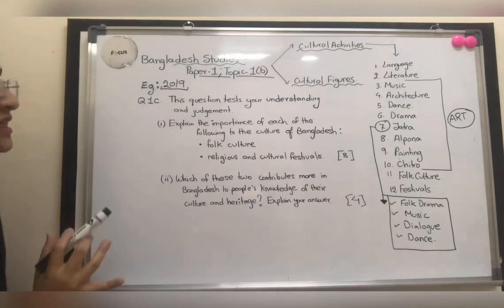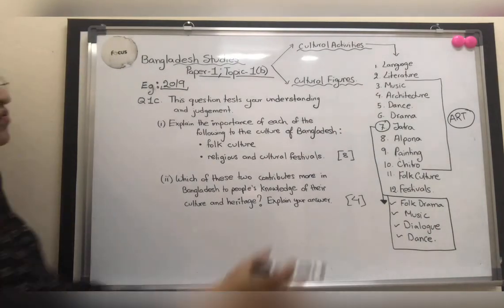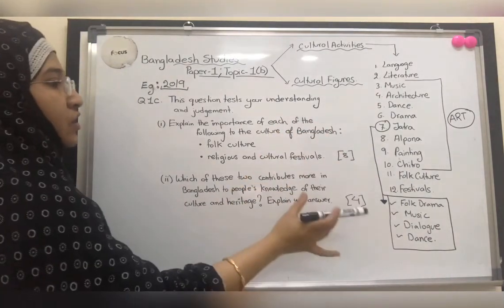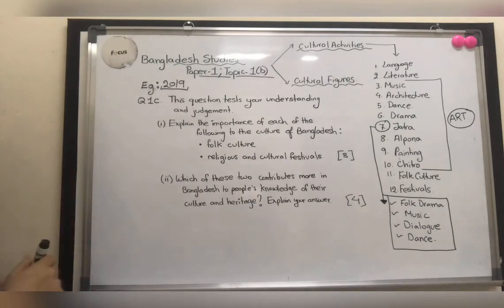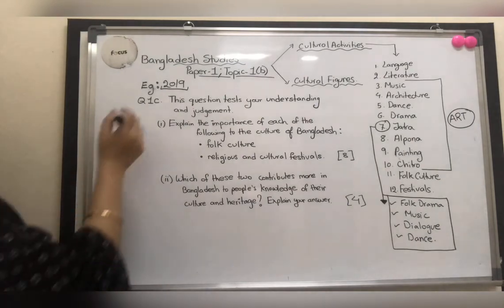Jatra is a multicultural activity which holds elements of folk drama, music, dialogue, and dance. Important points based on jatra can also be found under drama, music, literature, and dance sections, since jatra overlaps with all of these. This is what you have to study under the cultural activities section.